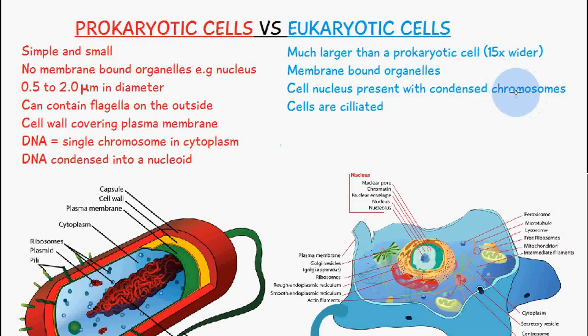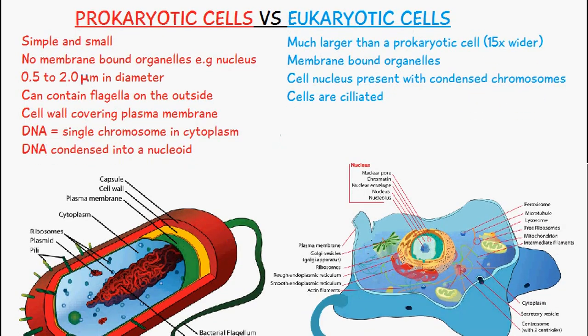Another thing to note is that eukaryotic cells are ciliated with primary cilia. This functions like an antenna for the cell — it can provide thermal function, movement, and various other sensory information for the cell. This topic will be covered in more depth in a separate video.